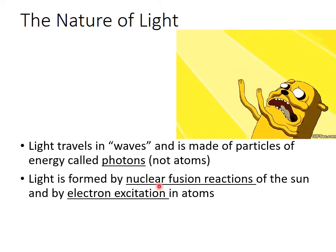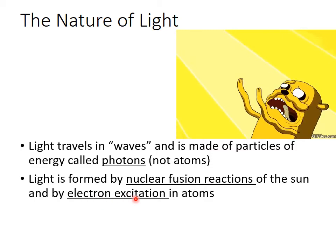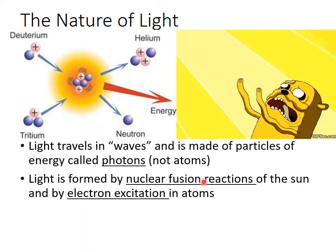Light is made in two different ways that you have to know. One is called nuclear fusion reactions—that's what happens in the Sun. The other is by electron excitation, which we'll cover in just a minute.